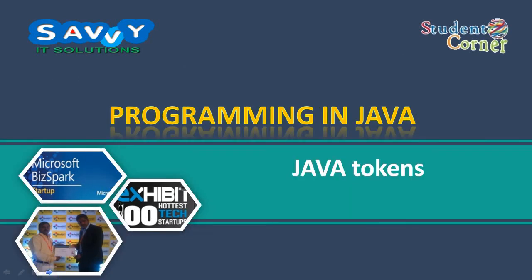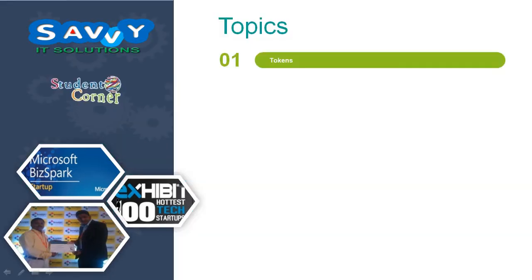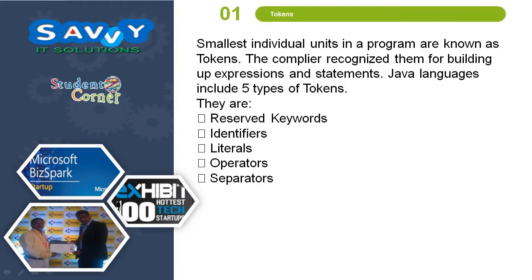Welcome to SaviIT Solutions. Now we are discussing Java Tokens. Tokens are the smallest individual units in a program. The compiler recognizes them for building up expressions and statements. Java language includes 5 types of tokens: reserved keywords, identifiers, literals, operators, and separators. We will learn each one in this section.